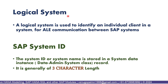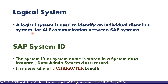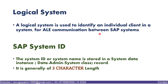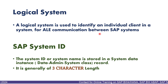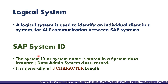Let us understand what exactly a logical system is. A logical system is used to identify an individual client in a system for ALE communication between SAP systems. The SAP Basis team will generally create this logical source system whenever you are creating an RFC connection between two different SAP systems, for example ECC and BW. Under that, they will also assign a background user so that background communication can happen between these two systems.